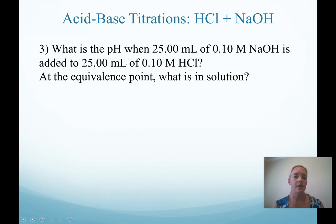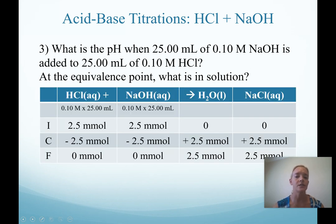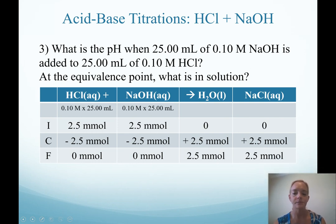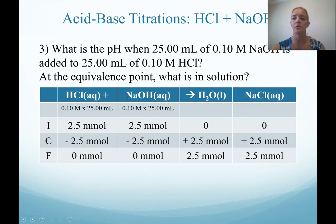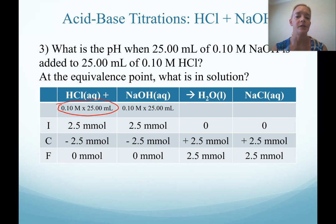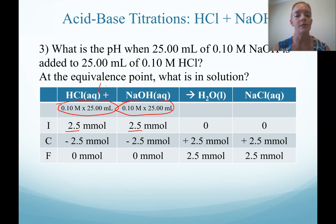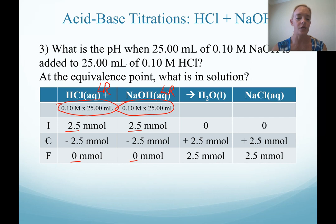We want to determine what's in solution. If you can't tell by the definition of the equivalence point, we can set up a change table. In our change table, we are calculating millimoles by multiplying concentration times volume in milliliters. We do that for both reactants. Notice that we have the exact same amount of each reactant, which means they are both the limiting reactant. If they both go to zero, all that I have in solution are my products — just water and sodium chloride salt.